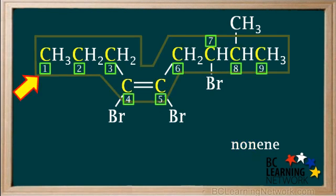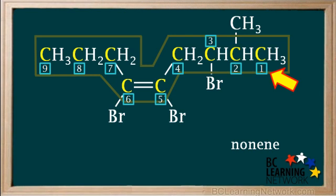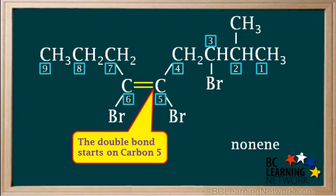If we number the carbon atoms from left to right, the double bond starts on carbon number four. If we count carbon atoms starting on the right, the double bond starts on carbon number five.